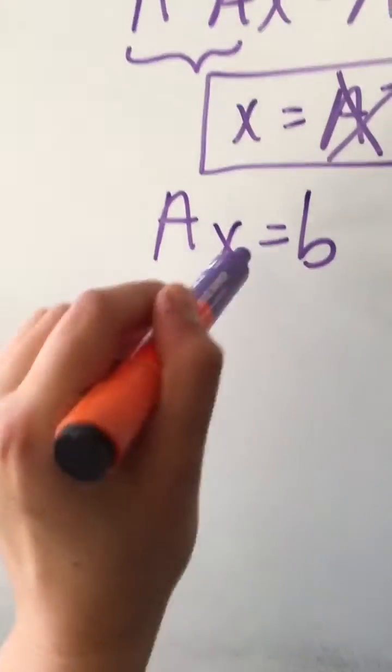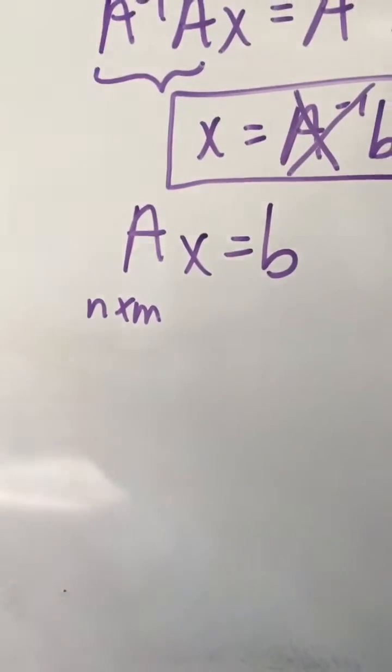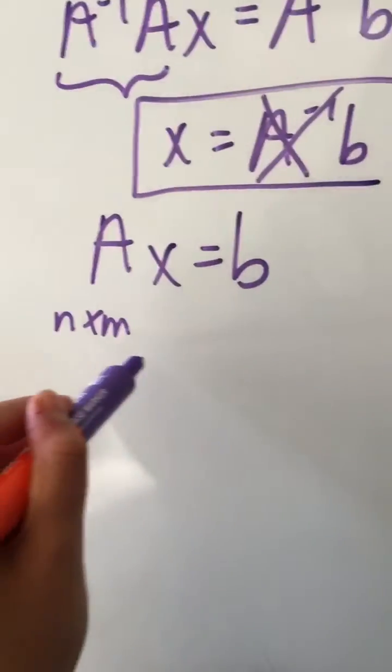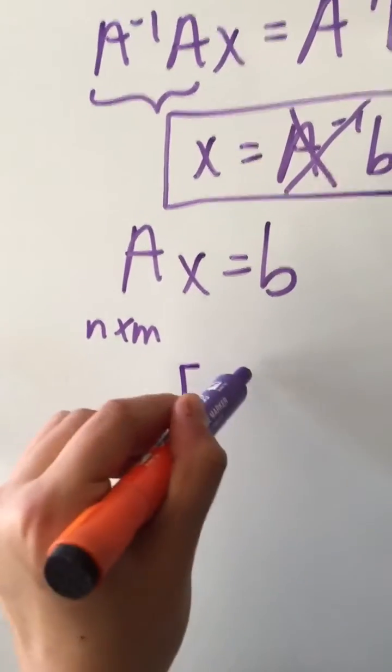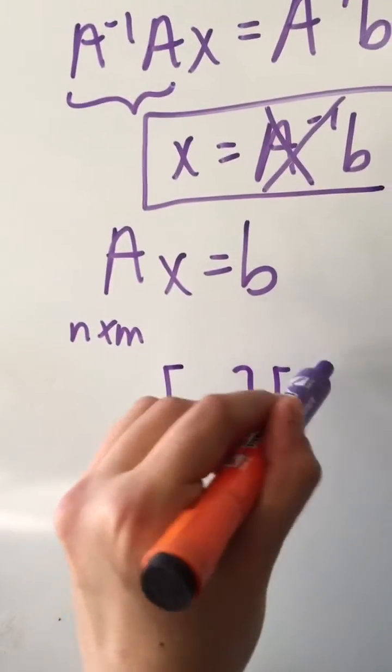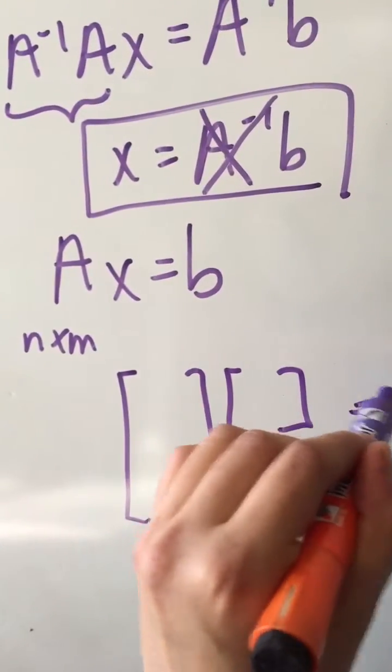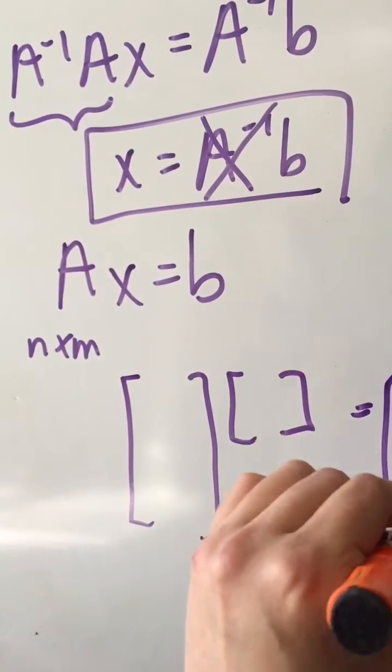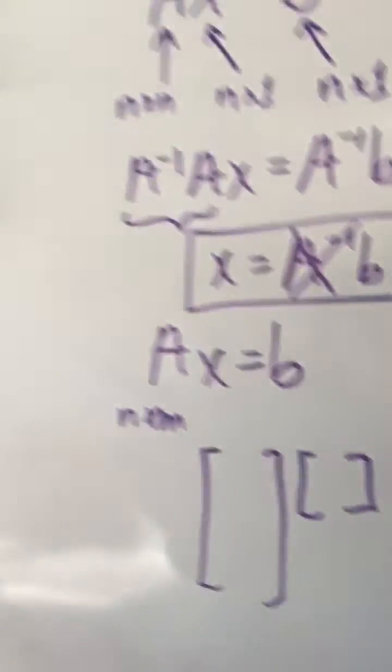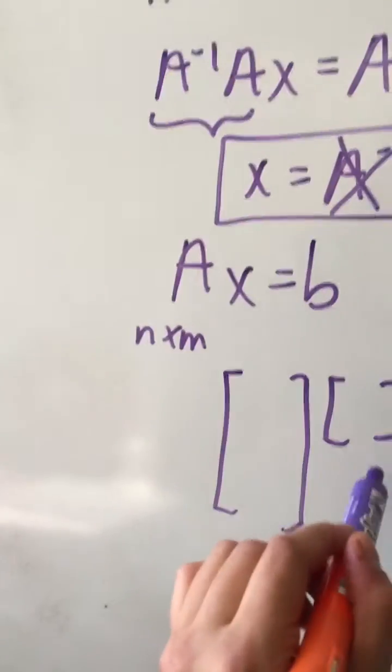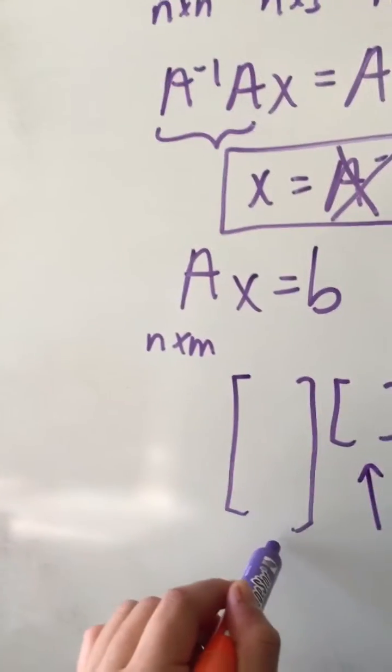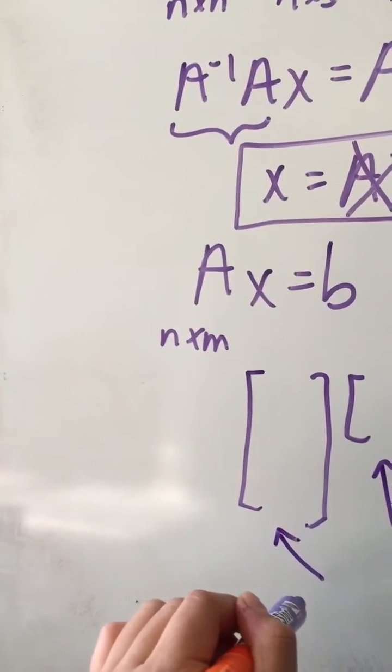In other words, if we were to express this as a system of equations, well in matrix form it would look something like this where we have too few unknowns and too many equations. It could look something like this and I'm just making up random numbers.